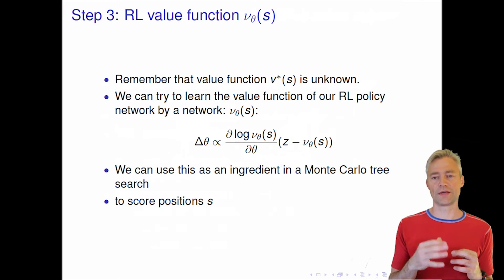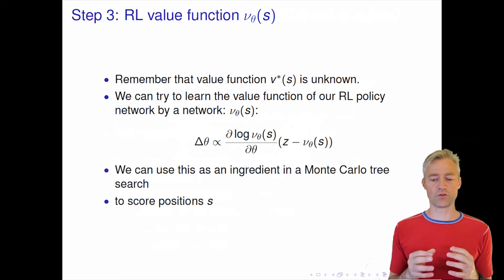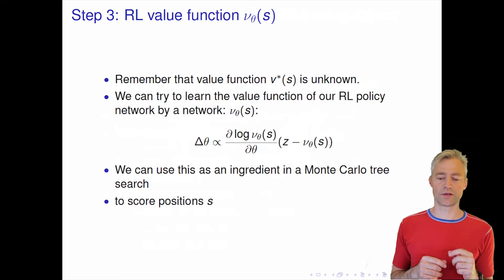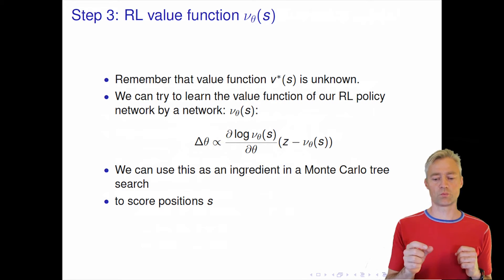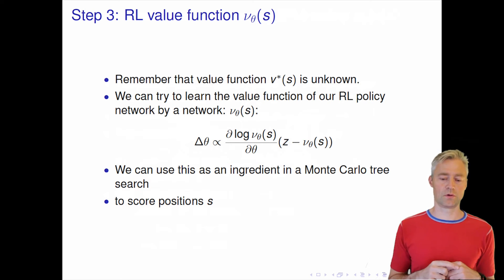The update rule now for the value network is that we adjust our value function such that it will mimic the actual outcome of the game. You can see that z is this plus or minus one, the outcome of the game, and we now want the value network to mimic that. The value network is a number between minus one and plus one, and that number quantifies whether it would be white that wins or black that wins.